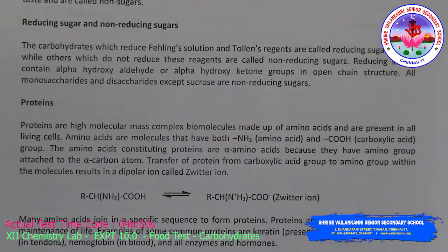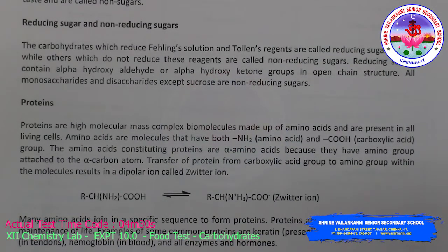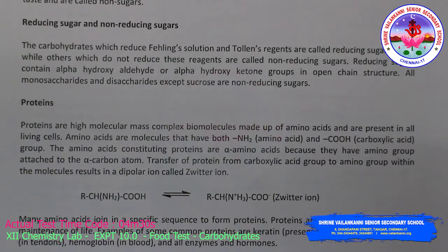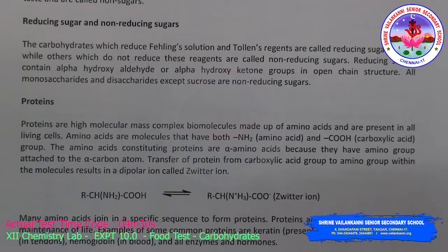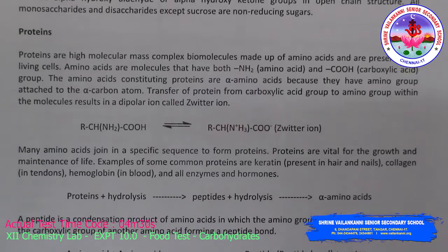The amino acids constituting proteins are alpha-amino acids because they have the amino group attached to the alpha carbon atom. The alpha carbon atom means the carbon adjacent to the functional group — the first carbon atom is called the alpha carbon atom.